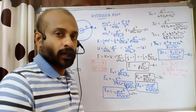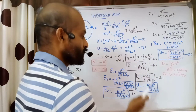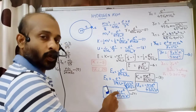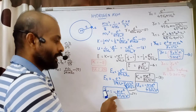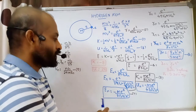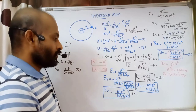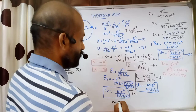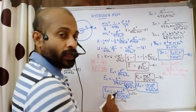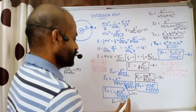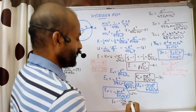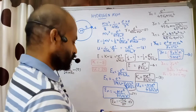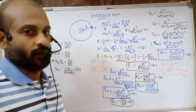These are all constant values — m, e to the four, eight, epsilon zero squared, h squared. When we substitute the actual values of mass of electron, charge of electron, and the other constants, we get the value minus 13.6. Converting to electron volts, the general equation for energy of an electron in the nth orbit is: en equals minus 13.6 by n squared eV.